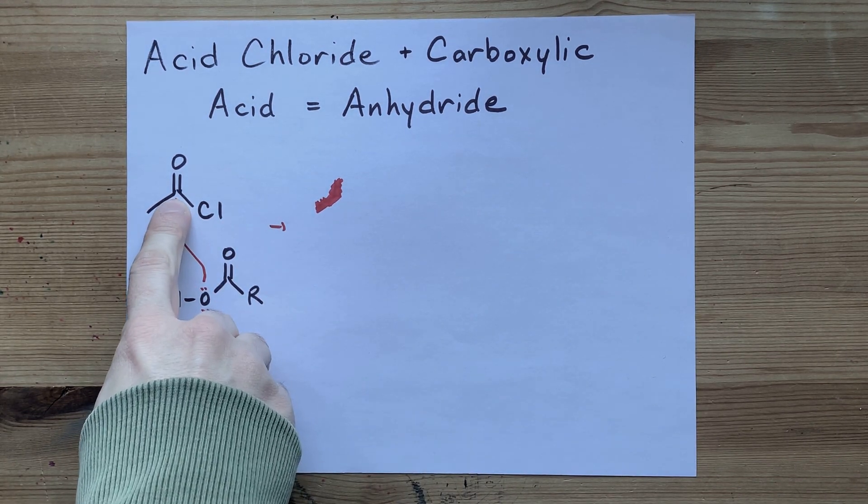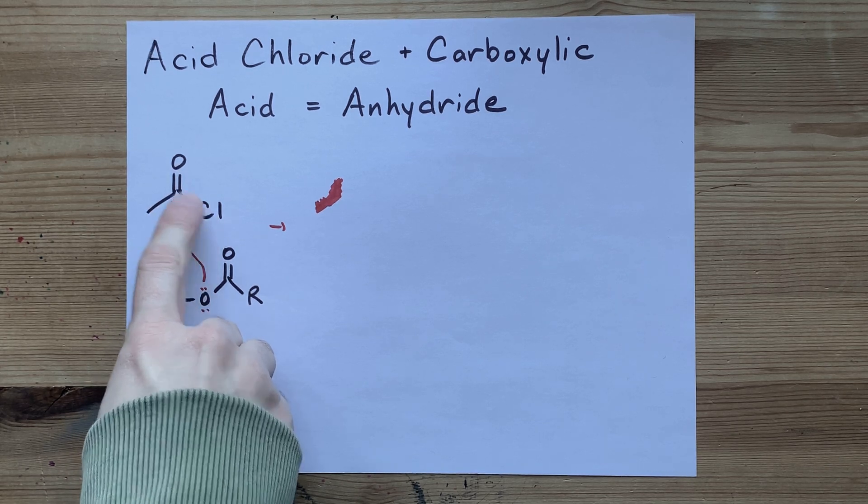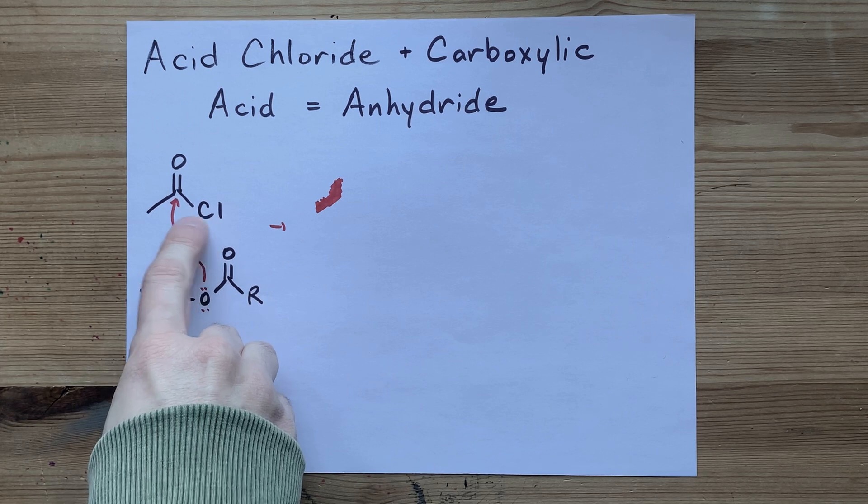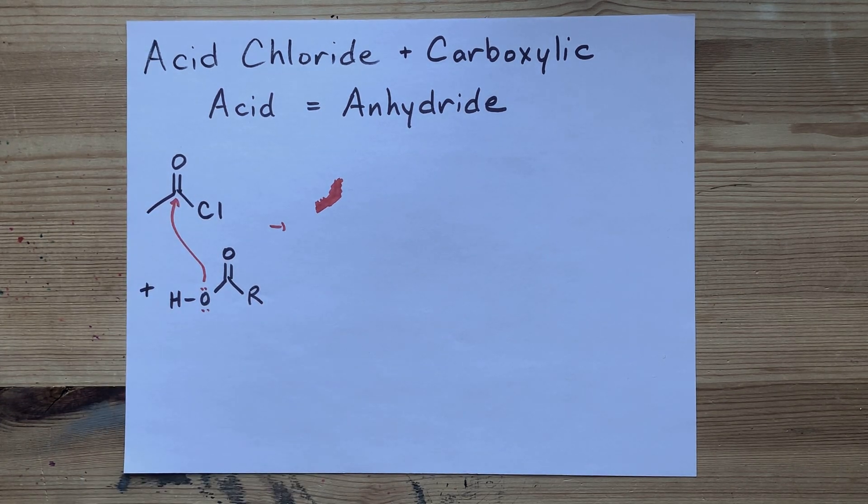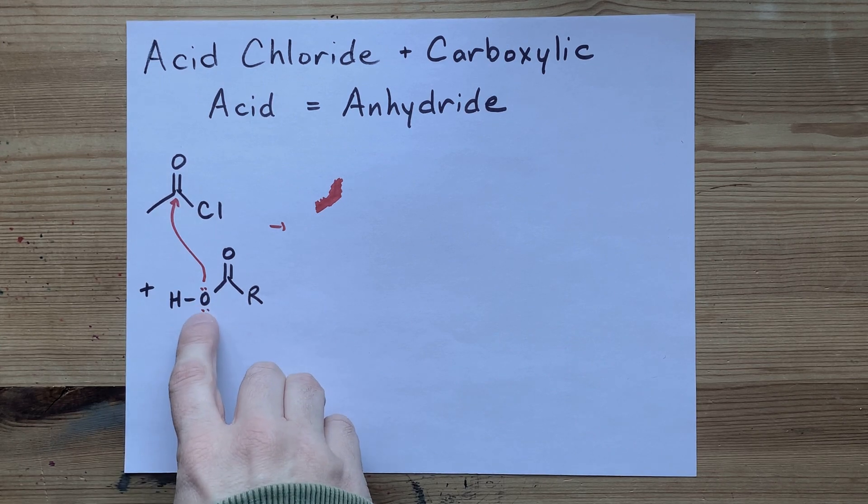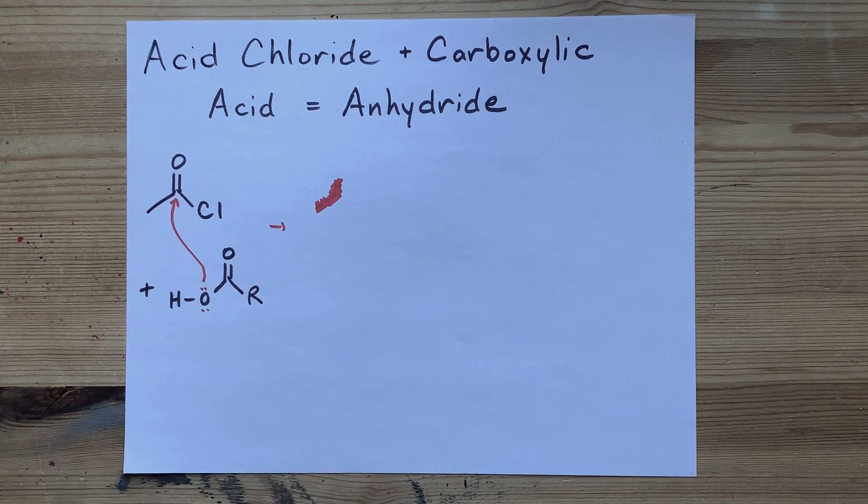This carbon of the acid chloride is double bonded to an oxygen and single bonded to a chlorine. Those are both very electronegative atoms, so there's a slight positive charge on this carbon here. That is ripe for attack from the lone pair of the oxygen, in this case on a carboxylic acid.